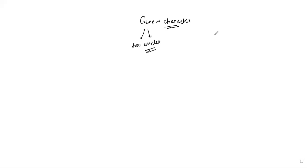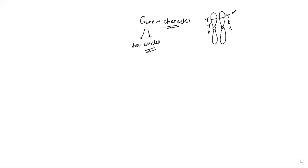The gene has two allelic forms present on homologous chromosomes. The possibilities: two dominant alleles, one dominant and one recessive, or both recessive. What does dominant mean? That this gene segment — the DNA segment — is making its mRNA, and this mRNA is going to be translated into proteins. These proteins are responsible for expression.